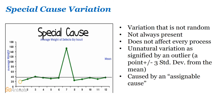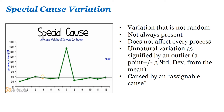Special cause variation, on the other hand, is variation that is not random, not always present, and does not affect every process. It is unnatural variation as signified by an outlier, which is a point plus or minus three standard deviations from the mean, and is caused by an assignable cause. Only 0.03% of the population will fall in this location. It is a one-time event unless the special cause is not eliminated, in which case it can show up in the manufacturing process as a repeater.